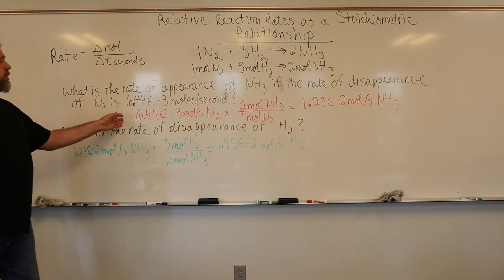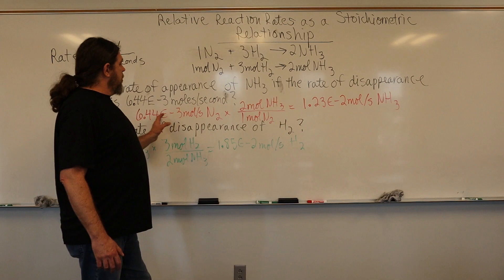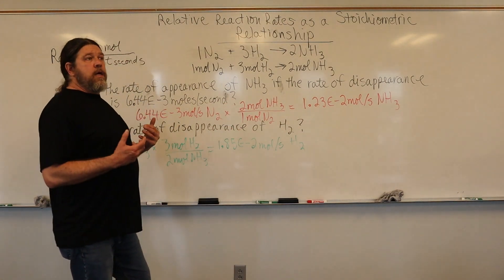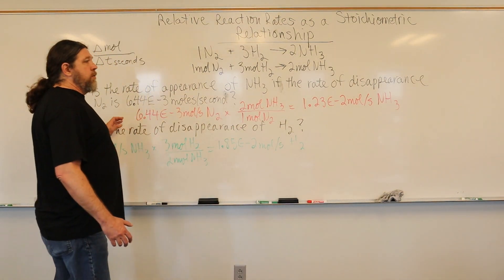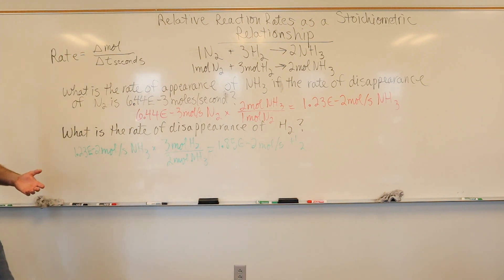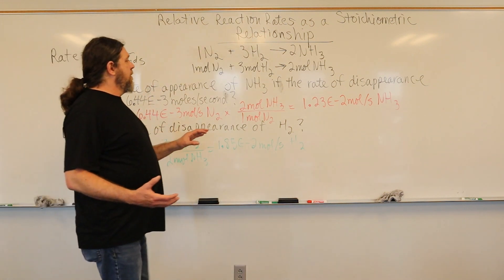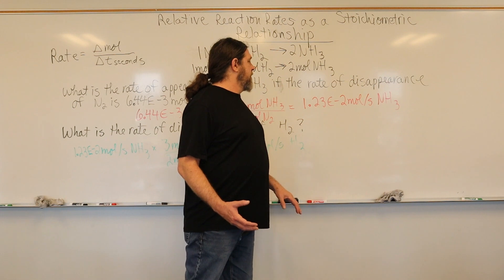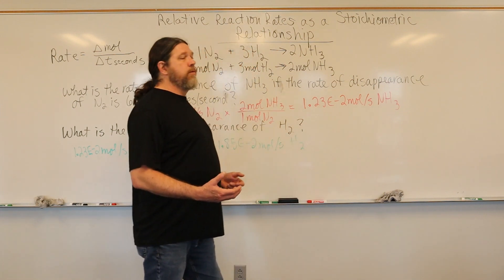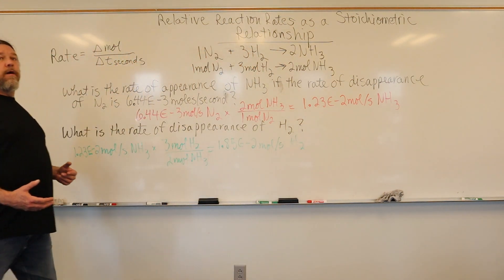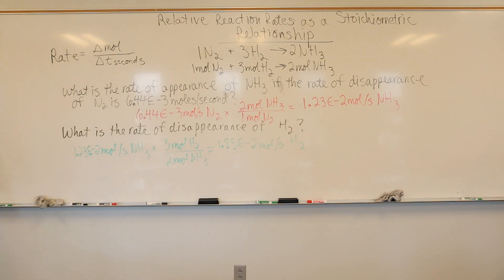We just simply do our classic mole-to-mole stoichiometry, unknown over known. This is what we learned months ago, and we get 1.23 times 10 to the negative 2 moles per second of ammonia is actually forming.